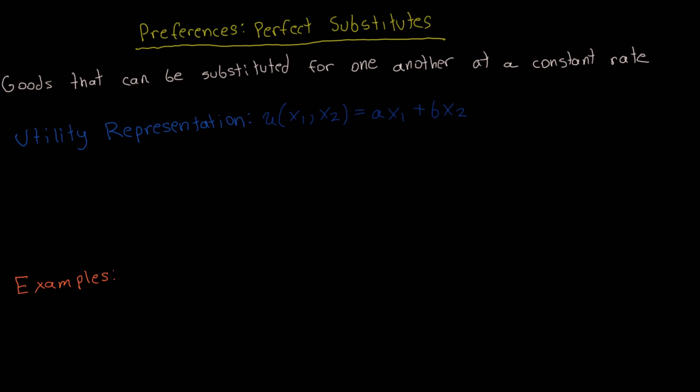One nice property about a linear utility function is that it has a constant marginal rate of substitution. The marginal rate of substitution between goods 1 and 2 is defined as the negative marginal utility of good 1 divided by the marginal utility with respect to good 2. This is basically the slope of an indifference curve if we put good 1 on the horizontal axis and good 2 on the vertical axis.